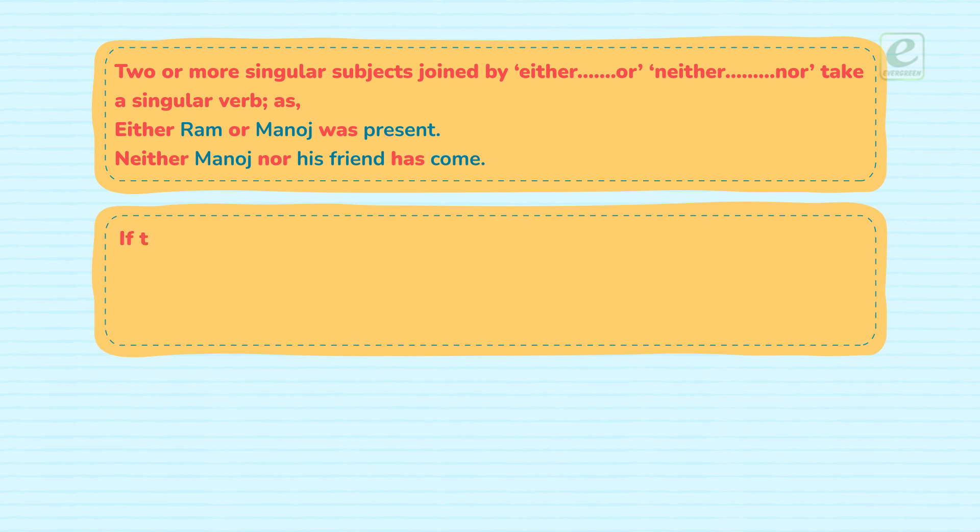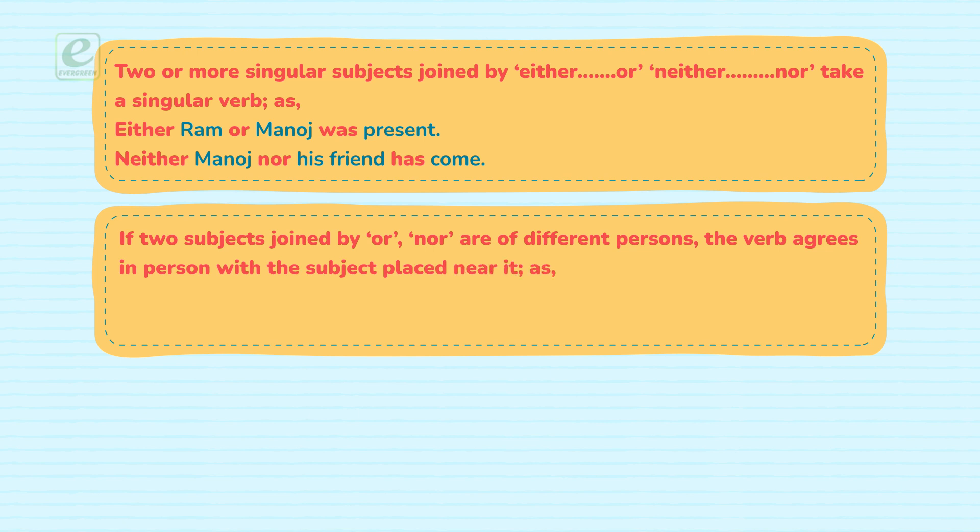If two subjects joined by 'or' or 'nor' are of different persons, the verb agrees in person with the subject placed near it.